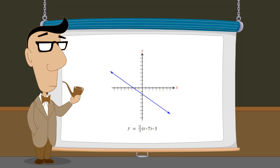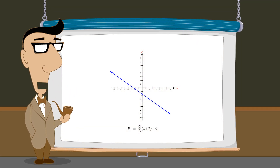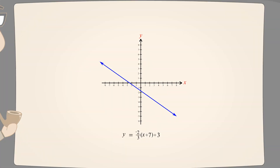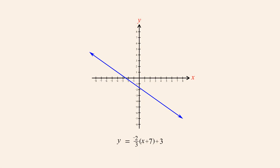Since we now have an equation which describes this line, we can determine the graph's y-intercept. It is difficult to tell by looking at the graph exactly where the line intersects the y-axis. However, we do know that the x-coordinate of this point must be zero, since every point on the y-axis has an x-coordinate of zero.